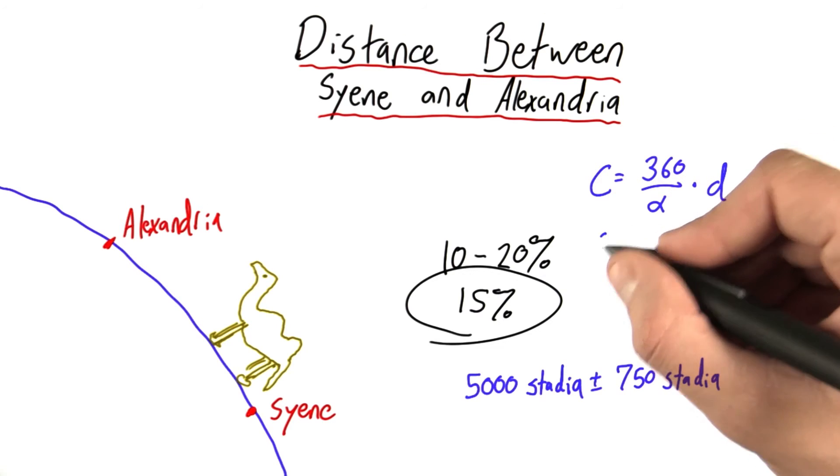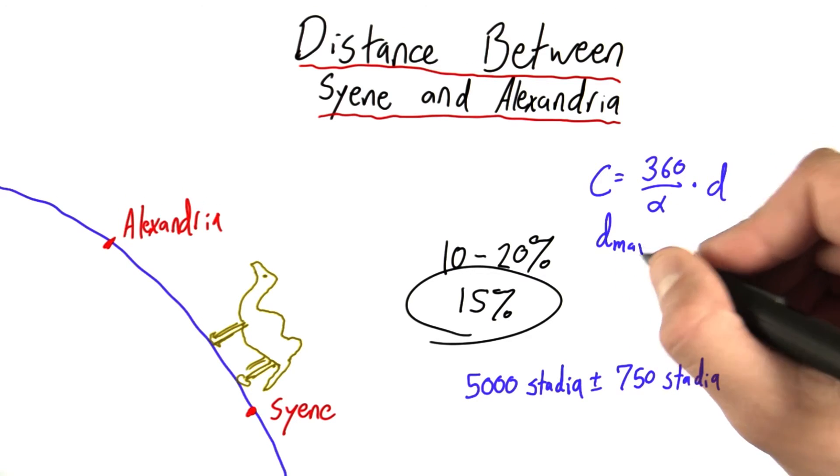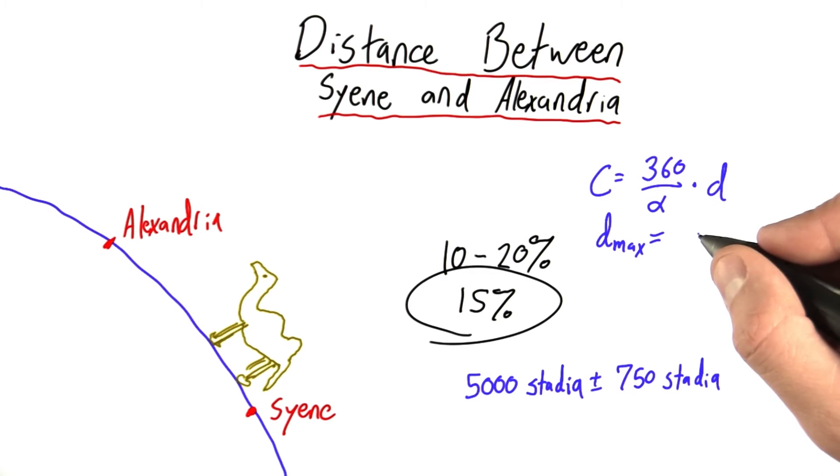We can do what we did last time and say, well, d max. The maximum possible value for d would be 5,750 stadia.